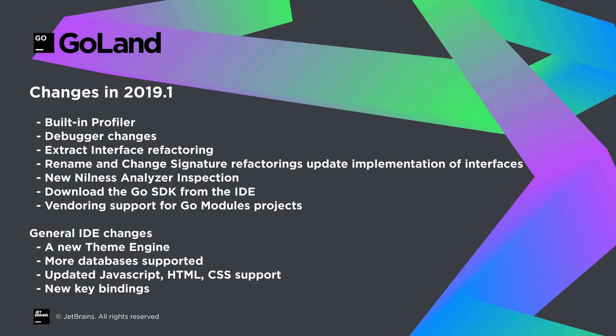We will cover the new built-in profiler, debugger changes, a new extract interface refactoring, support for updating implementation of interfaces when using rename and change signature refactorings, the new nilness analyzer inspection, the ability to download the Go SDK straight from the IDE, vendoring support for Go modules, and more IDE general changes from the IntelliJ platform, such as a new theme engine, more databases supported, updated JavaScript, HTML and CSS support, and even new key bindings.